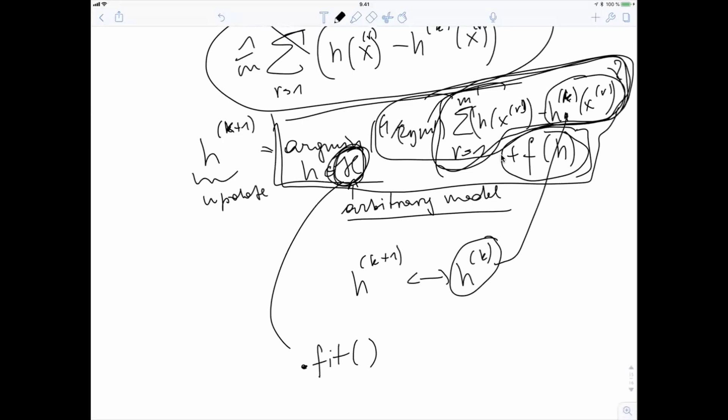So we have now a generalization of a gradient step that uses dot fit functions. And you need to repeat, like in gradient descent where you repeat gradient steps, you need to repeat this implementations of the dot fit function, which minimizes this objective function or training error here.